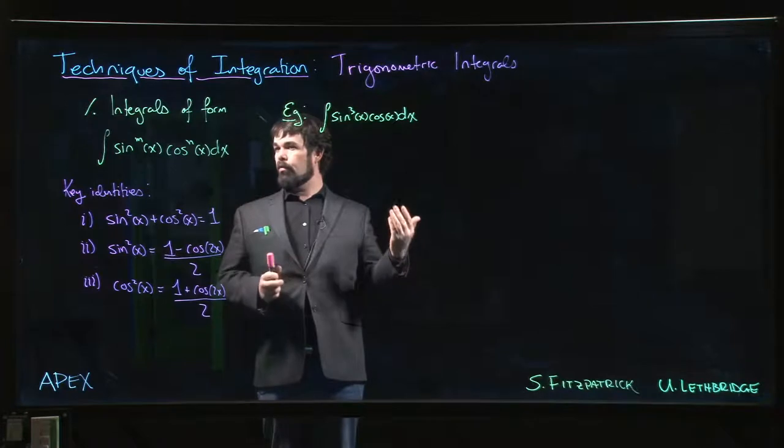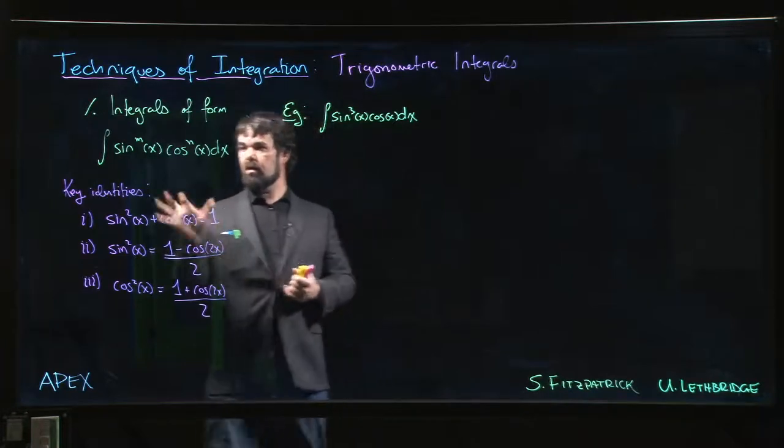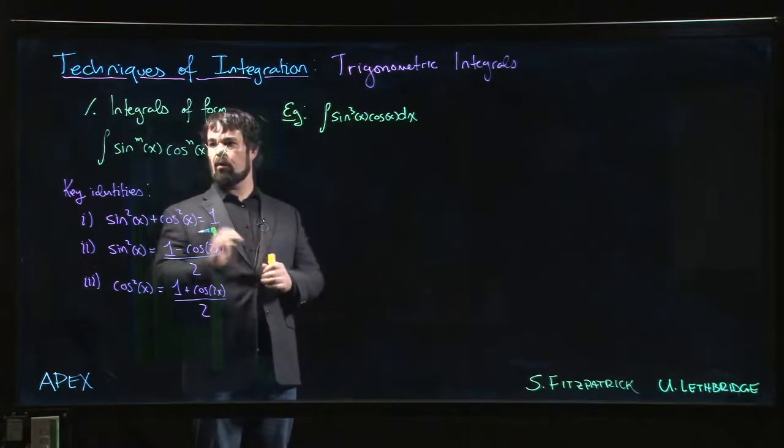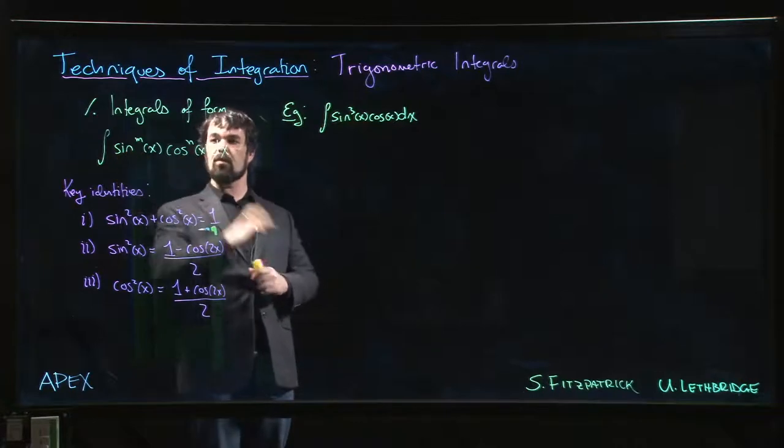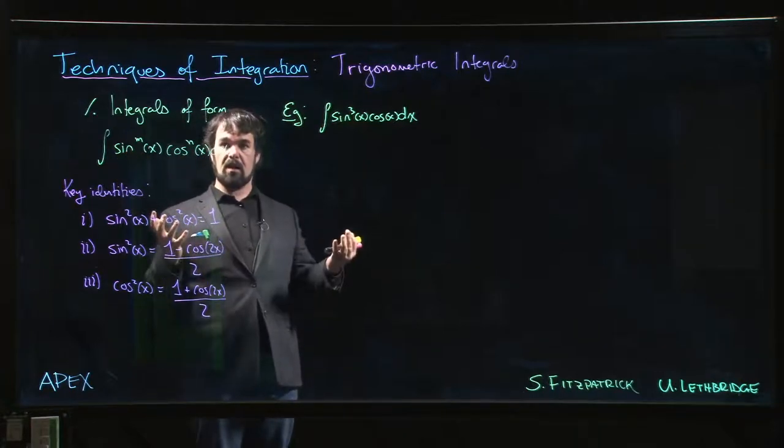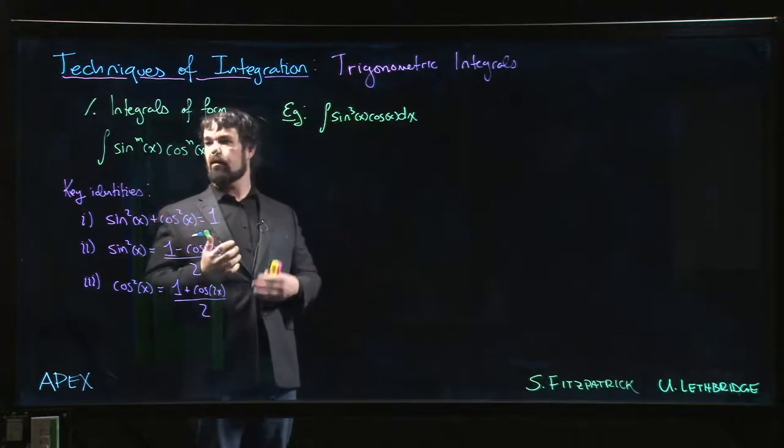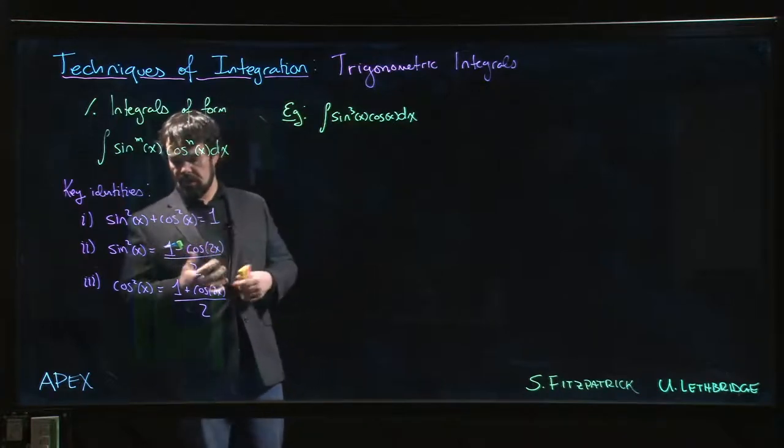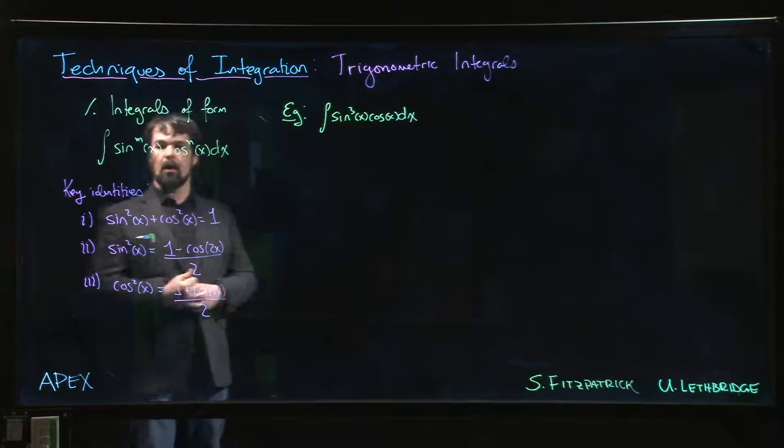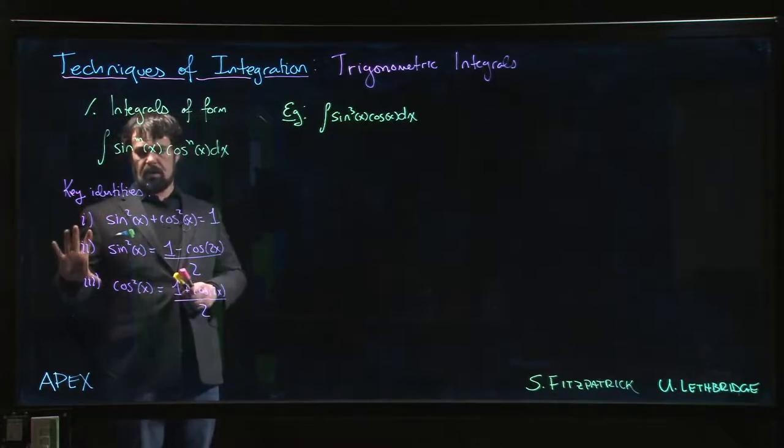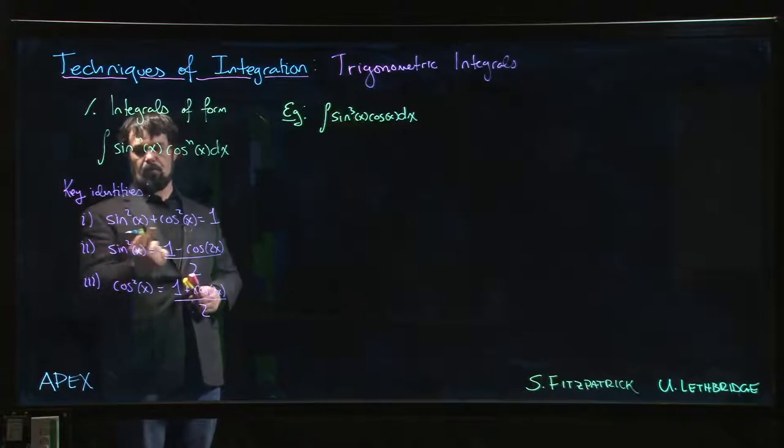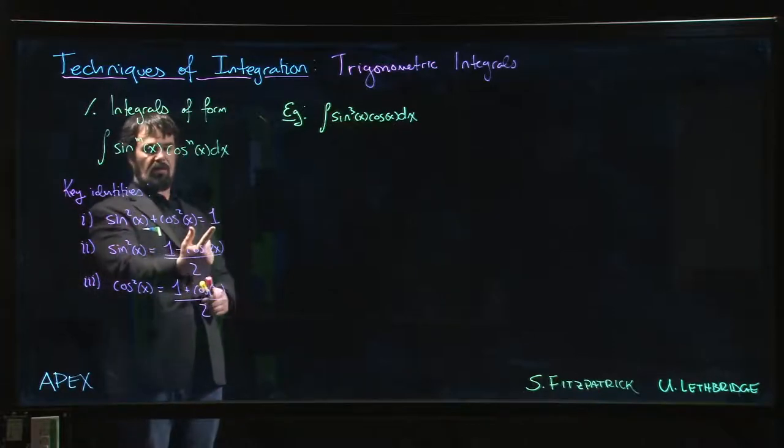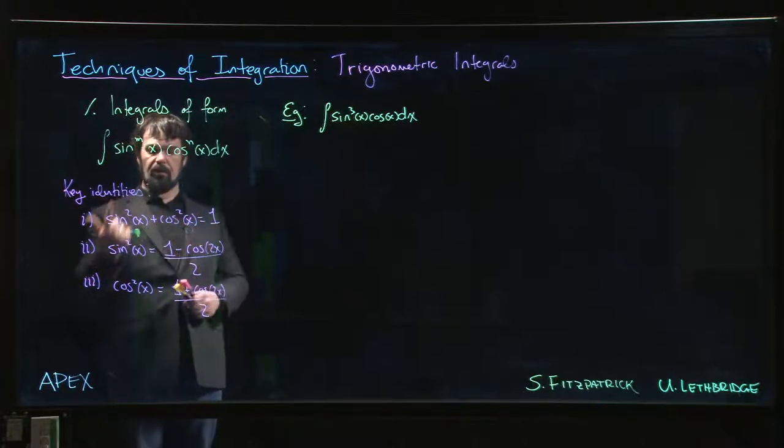So first we're going to look at integrals of this form, where we have some power of sine multiplied by a power of cosine, and we want to evaluate the integral. Now there are a number of ways that you can attack these. There are different identities that apply, but one of the basic approaches to take is to remember that we can always write sine squared in terms of cos squared. We can always write cos squared in terms of sine squared.